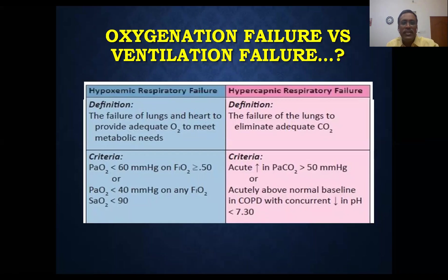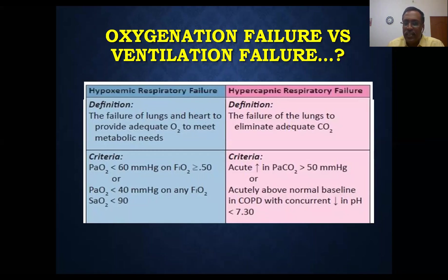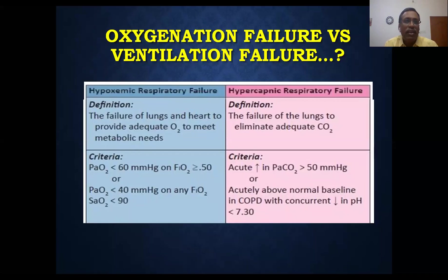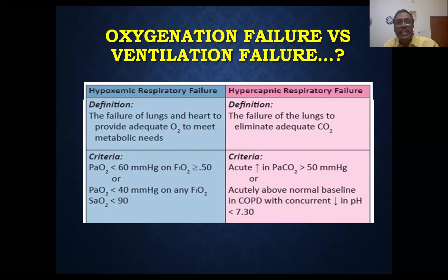The next type is ventilation failure. When I use the term 'ventilation,' that always refers to CO2 elimination. If CO2 is not eliminated properly, that condition is called ventilation failure. We can measure the CO2 level by ABG machine — if it is more than 50 mmHg, we can label the patient as having hypercarbia, that is hypercarbic ventilatory failure. This type of patient needs invasive ventilation, unlike oxygenation failure.